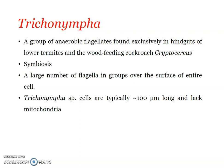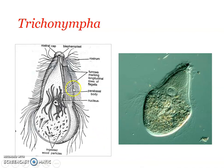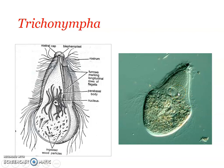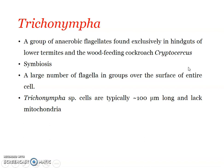Trichonympha is an endosymbiont anaerobic flagellate coming under Parabasalia. A large number of flagella is found in groups over the entire surface of the cell. There is a blepharoplast, which is a very typical structure. You can see ingested wood particles inside, and it has an oval shape with a rostrum on the anterior part. A rostrum cap is present, and all throughout the body you can find flagella, supported by the parabasal body — that is why the group got the name Parabasalia.